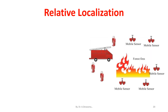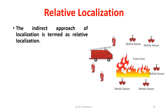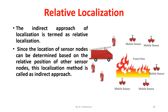The indirect approach of localization is termed as relative localization, since the location of sensor nodes is determined based on the relative position of other sensor nodes. This localization method is called the indirect approach, and relative localization is used to find out the distance between the nodes.